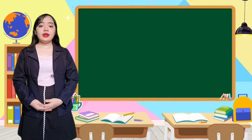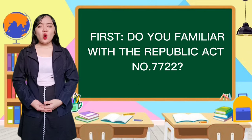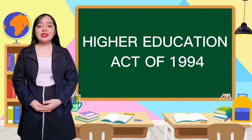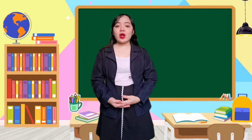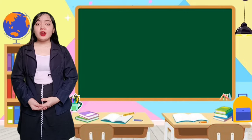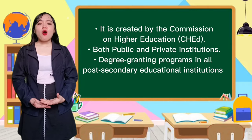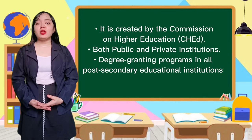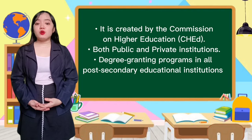Are you familiar with Republic Act No. 7722? It is also known as the Higher Education Act of 1994, which was enacted and legislated. It established the Commission on Higher Education, or CHED, which has oversight not just over public higher education institutions but also private institutions as well.